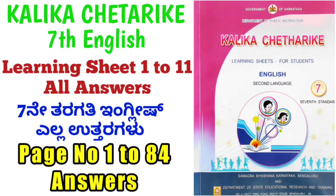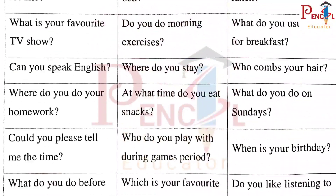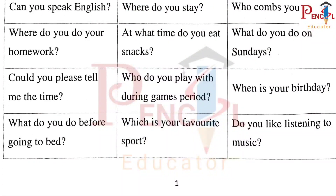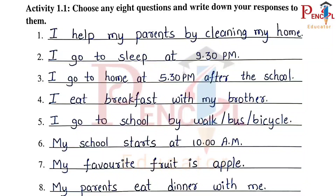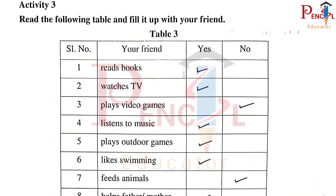In this video, we will come to know the answers for Kalika Chyatarake English 7th Standard, page number 1284. Learning Sheet 1, Learning Outcome 7.1, Activity 1.1 — actions are put in the appropriate columns.